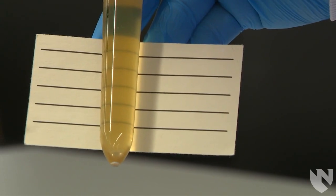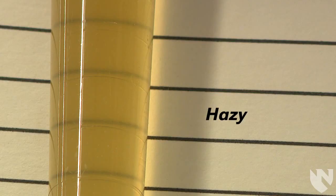The next urine is considered hazy. With the hazy urine, you can still see the lines on the card but you might also see some physical particles in the urine.